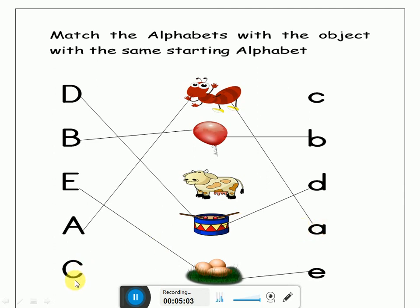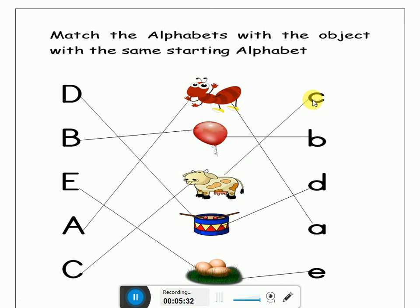Now look at this letter. This is letter C. Which letter is this? C. Let's match it with the object. Where is the C object? Here it is. Let's match it. Well done. Now where is the sound of letter C? Here is the sound of letter C. Well done. And what is the sound of letter C? K. Cow. C. K. Well done.